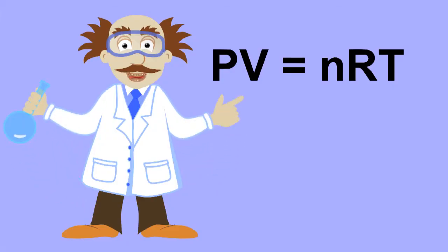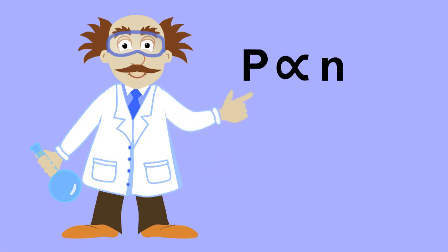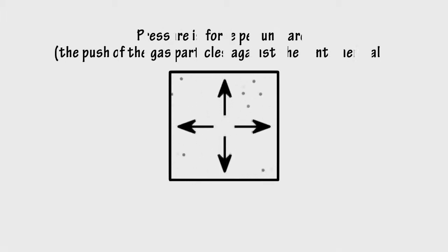If the temperature and volume of gas are held constant, then the pressure it exerts is directly proportional to the number of gas particles. The gas particles in a container push against its inner walls, exerting an outward force. That's what's meant by pressure.